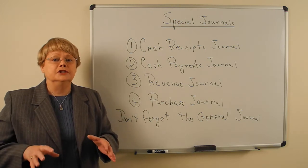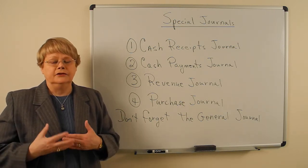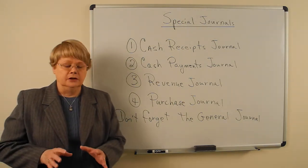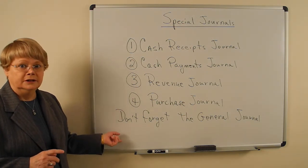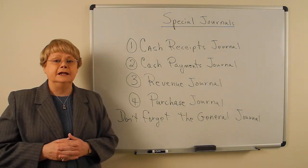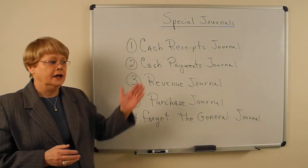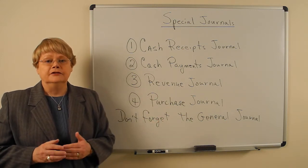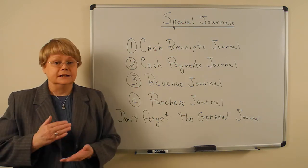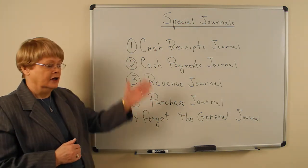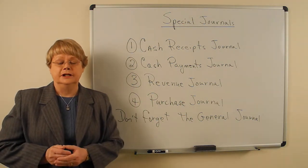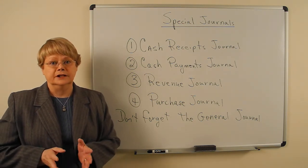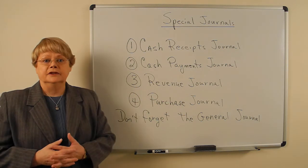We're going to look at each individual transaction, and if it fits into one of these special journals, that's where it goes. Everything else goes into the general journal. One error students make is trying to put a transaction in both a special journal and the general journal — don't do that. If a transaction goes in a special journal, it does not go in the general journal. Examples of entries that go in the general journal would be adjusting entries or closing entries, since they're not associated with any of these activities.